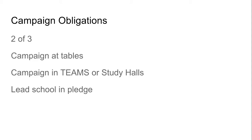You have some other campaign obligations. You don't have to do all three of these, but you have to do two of the three. You can campaign at tables during lunch, before school, or even after school. You'll need to record those on your phone so I know that you did them. You need to be going to different tables and campaigning about why people should vote for you.